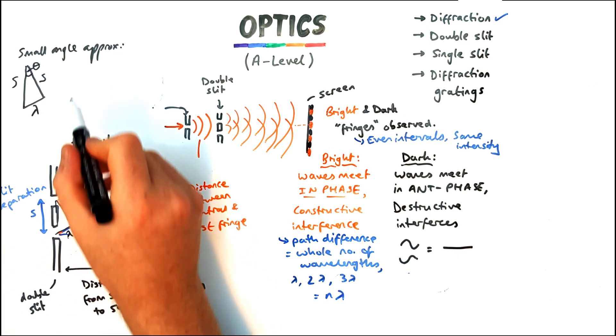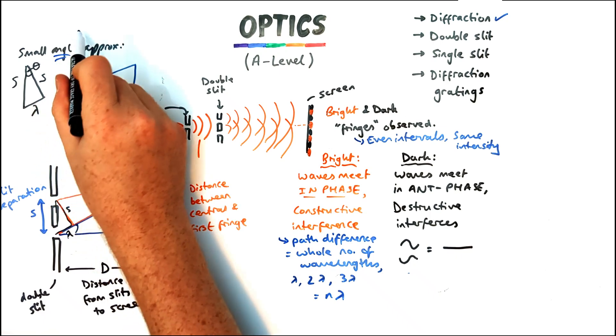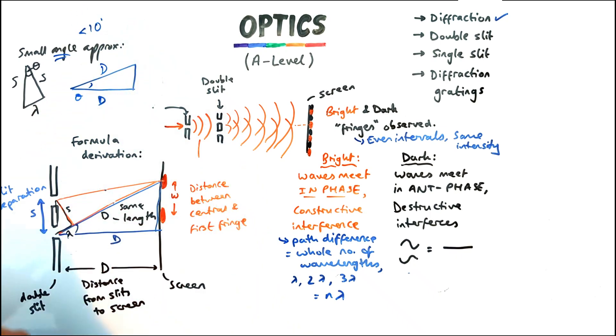Now we're going to compare this to the larger triangle on the screen. Now the larger triangle on the screen which I'm drawing out now, this blue triangle, has the D, the distance between the slits to the screen, as one side. But because the angle again is small we can say that the hypotenuse is also going to be D. And the opposite is going to be the width distance between the two fringes.